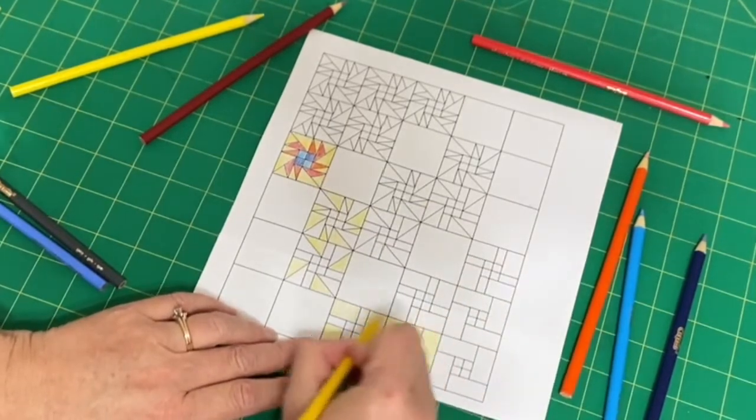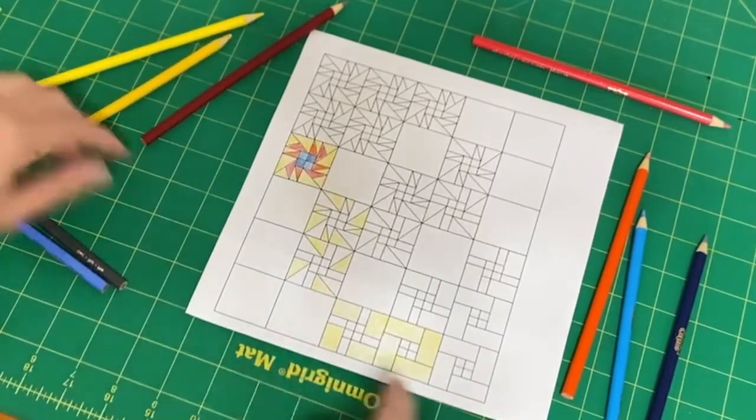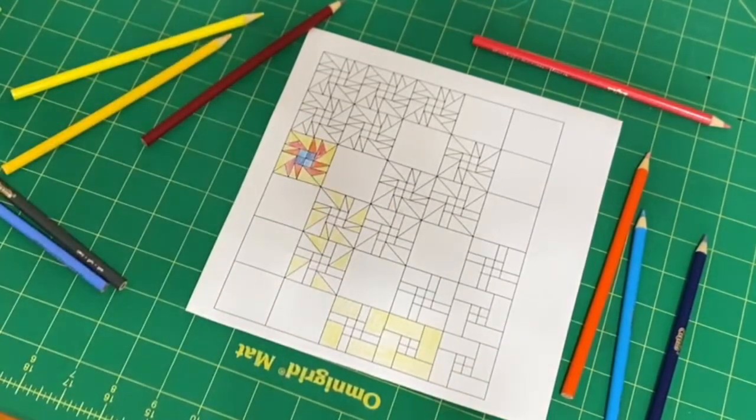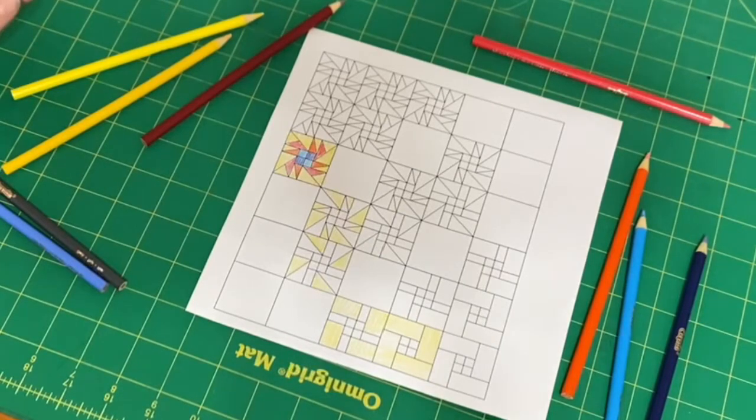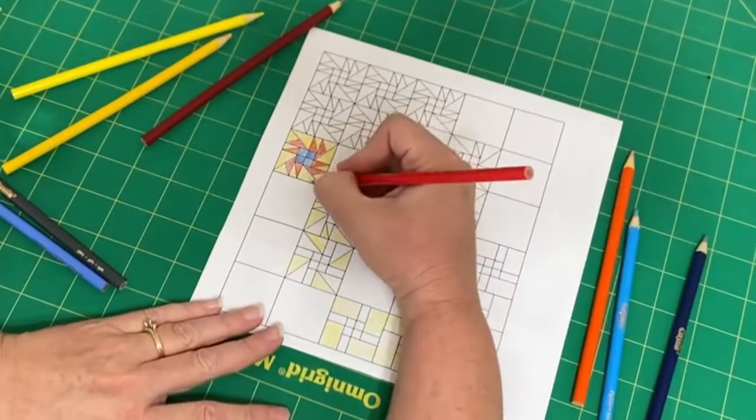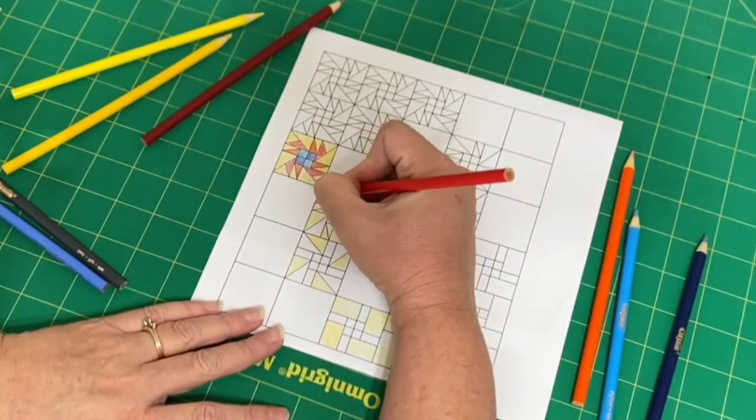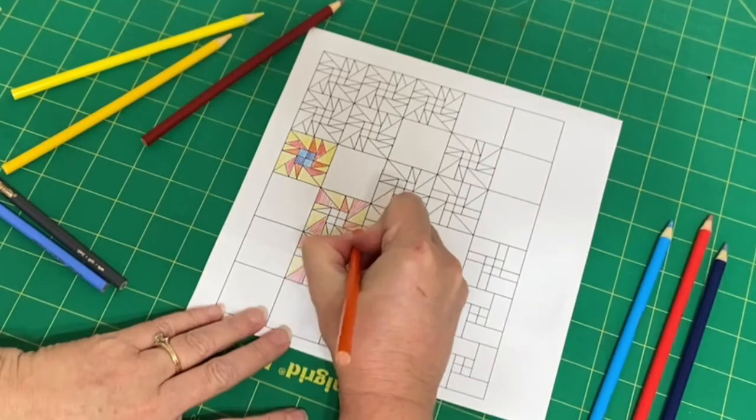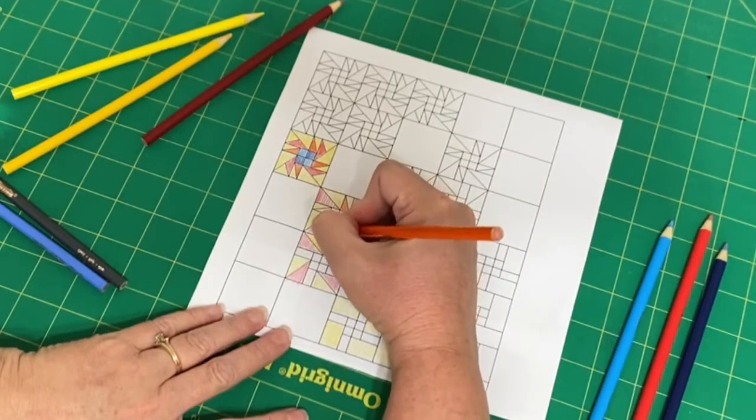So where the original pattern calls for three different colors of the background, you can make your quilt with a single background color. And our large triangles red.